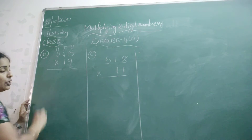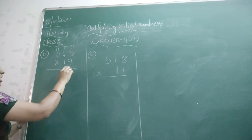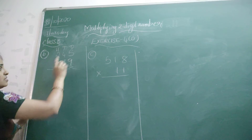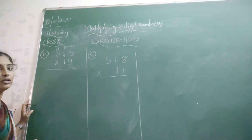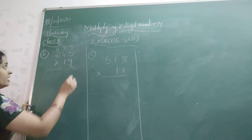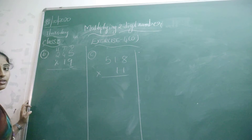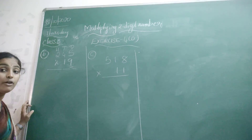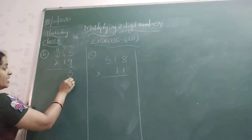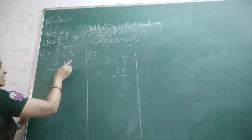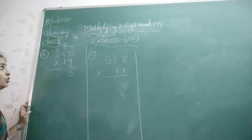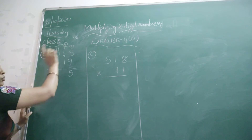Now multiply with 9 first. Multiply 9 × 5. How much is 9 × 5? It is 45. So what you got? 45. Now in the 1's place write down 5, and take 4 as a carry for the next number. So that is 5 and carry 4.